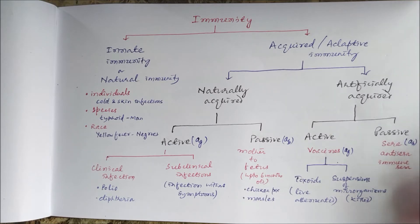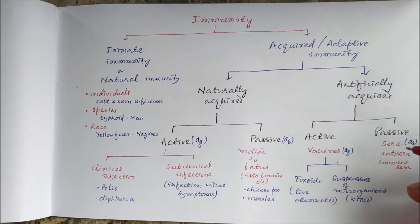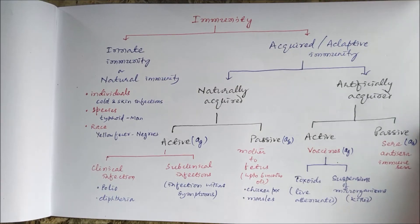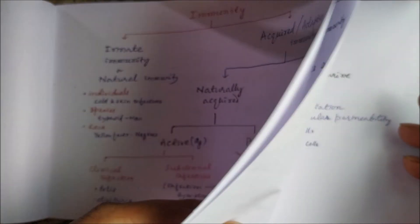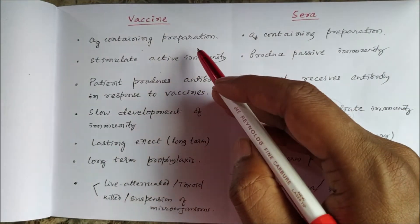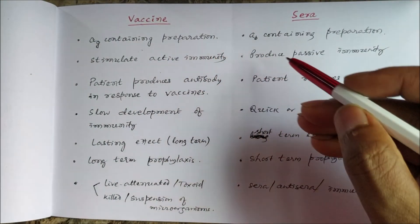For example, anti-rabies serum is the sera used against rabies. Sera and anti-sera are the same. So to summarize: a vaccine is an antigen-containing preparation, and sera is an antibody-containing preparation.